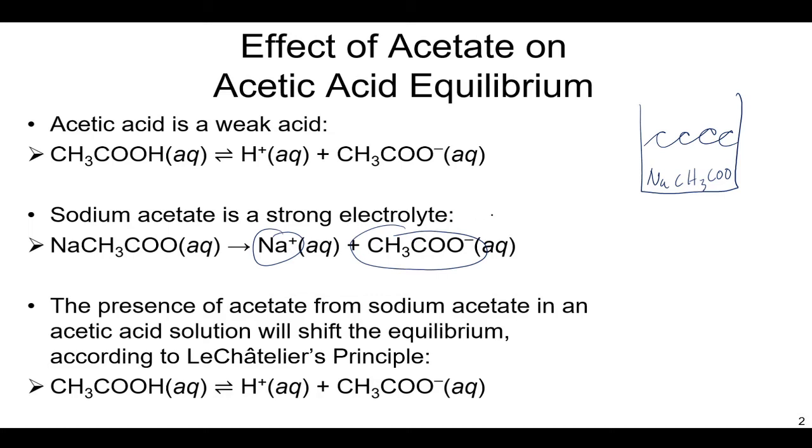The sodium ion is going to be a spectator, but this acetate ion is then going to affect the equilibrium of the weak acid. And so the presence of this acetate that's floating around in here because it's dissociated from sodium acetate is going to affect how much this acetic acid that is being added to this solution or that's already existing in this solution is going to want to go to the right and dissociate. Because there's already this acetate ion there. And so the presence of this acetate ion will actually shift the equilibrium according to Le Chatelier's principle.